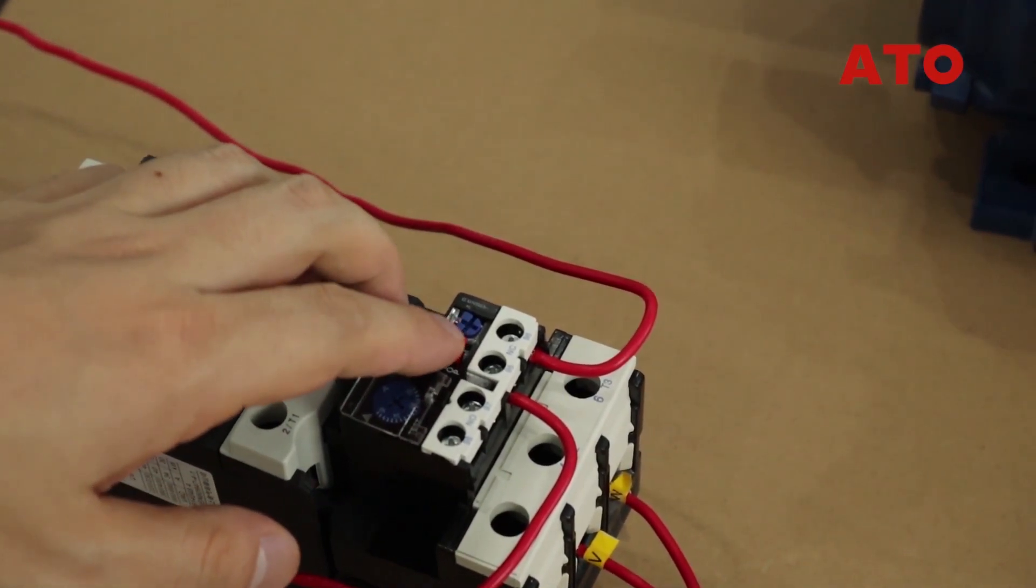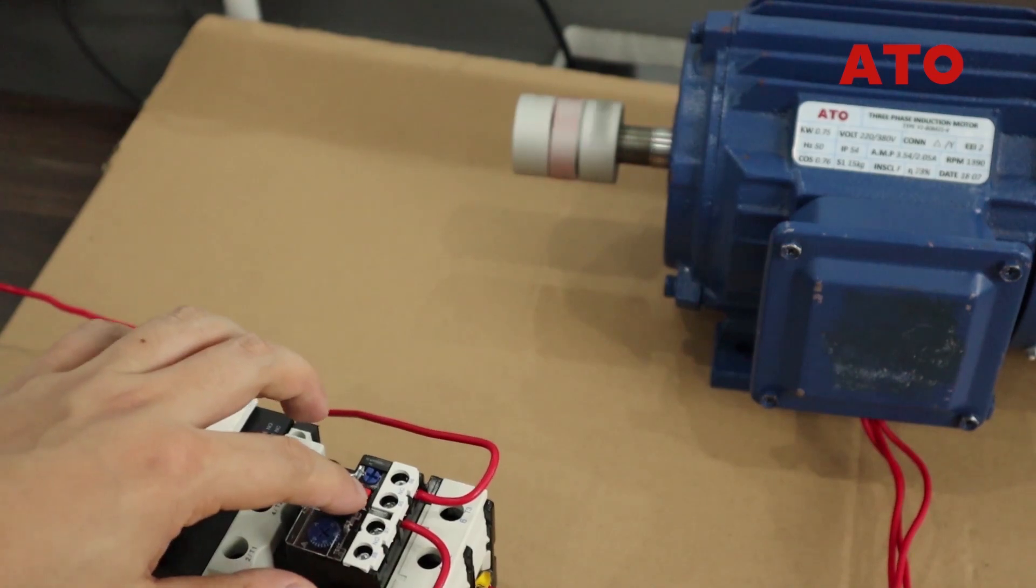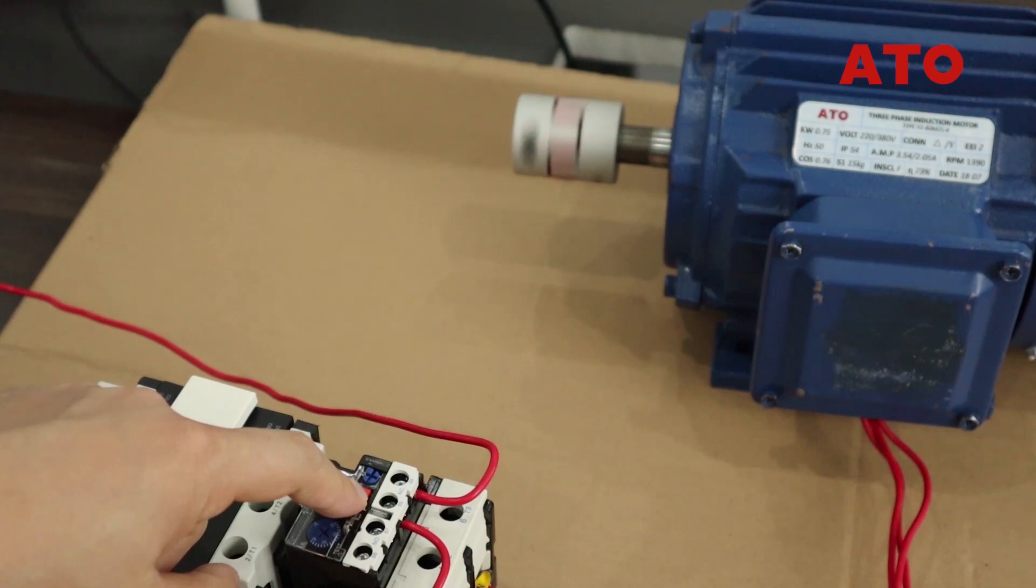The red button is to stop the relay. Long pressing on it will break the circuit and the motor is de-energized. You can see the motor is slowing down and finally stops.